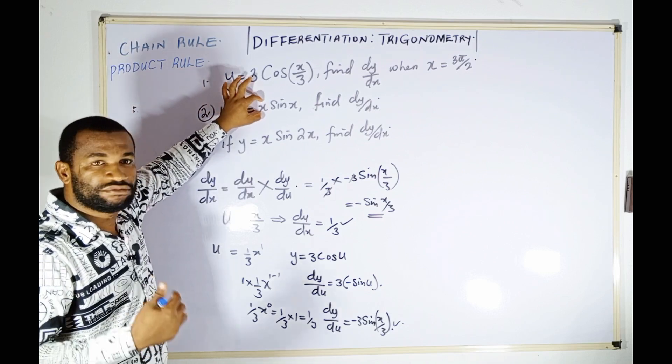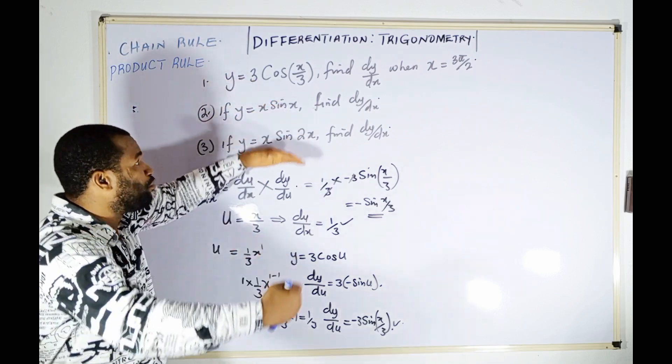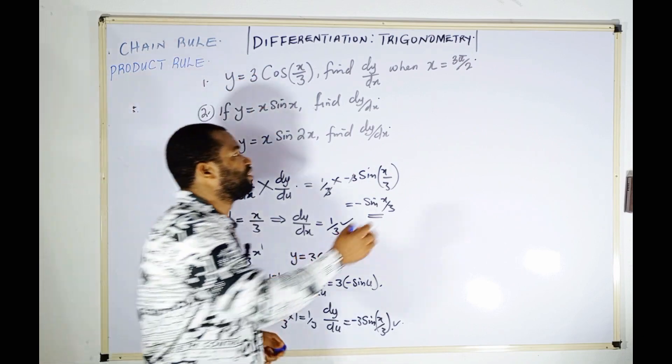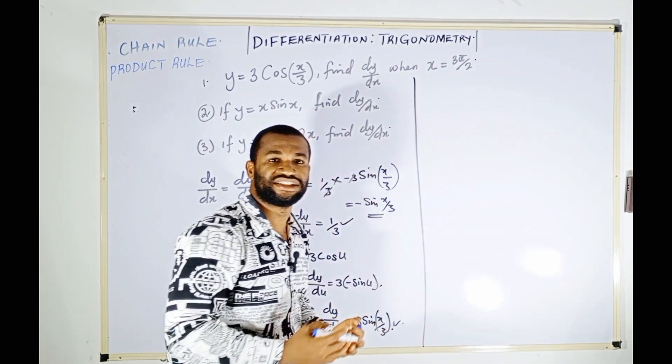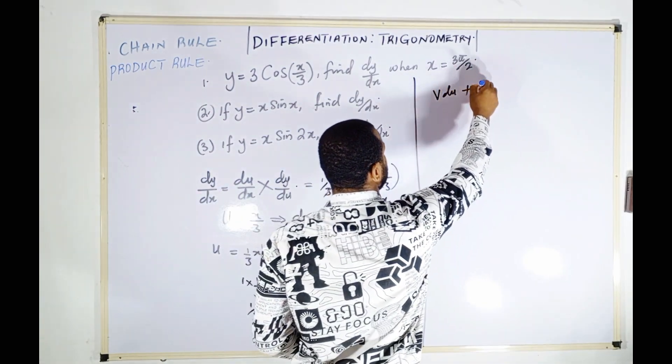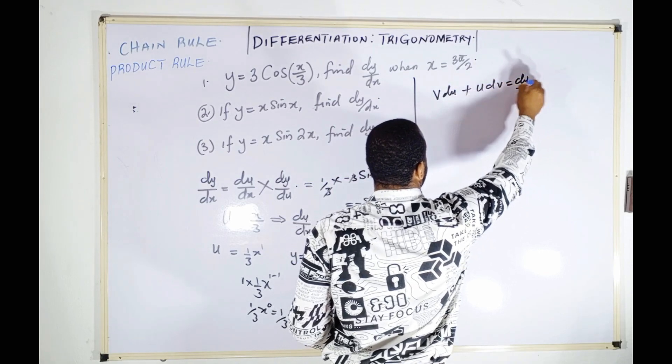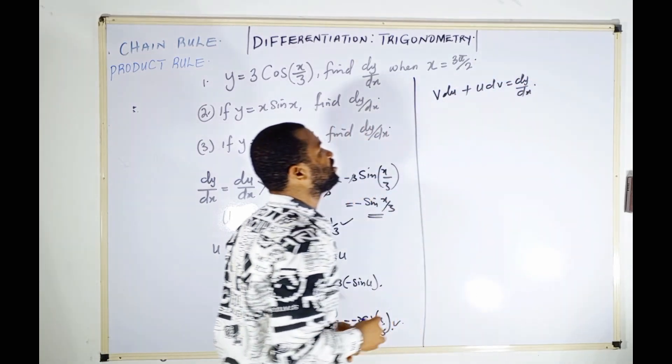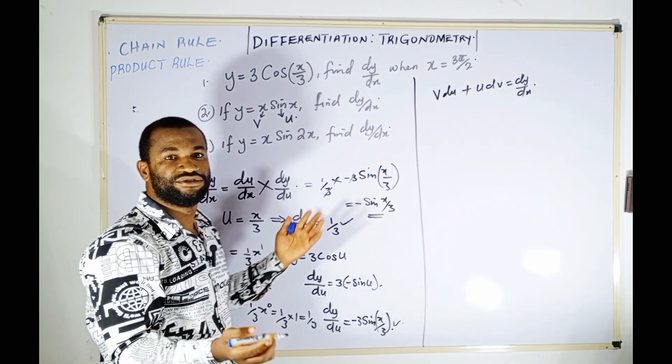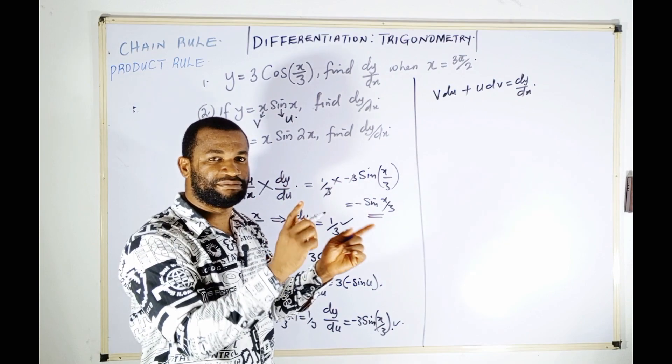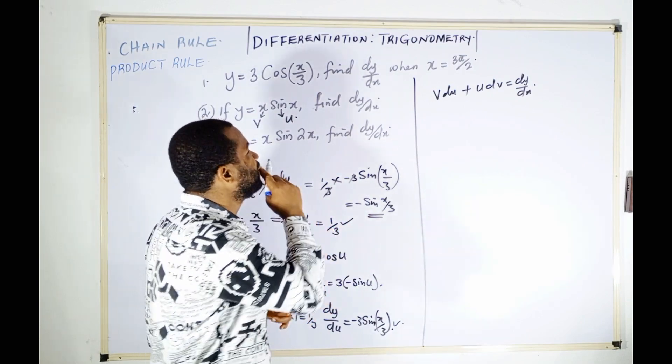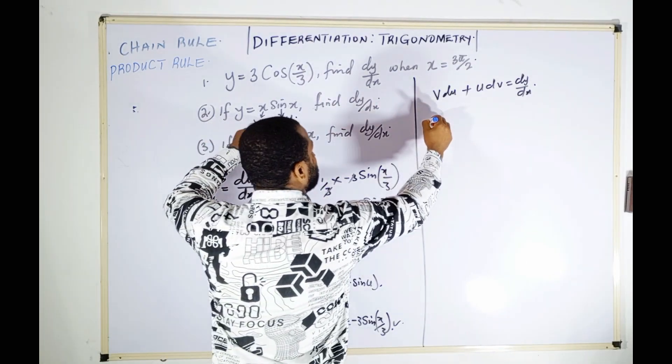In question two, I have an algebraic function multiplying a trigonometric function, so it's a product rule. Product rule says dy/dx = v(du/dx) + u(dv/dx). Let v = x and u = sin(x).